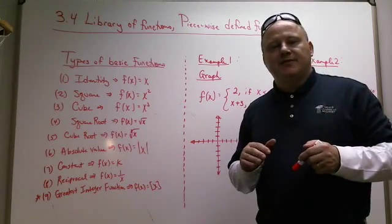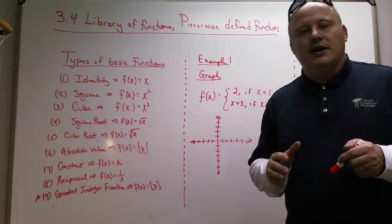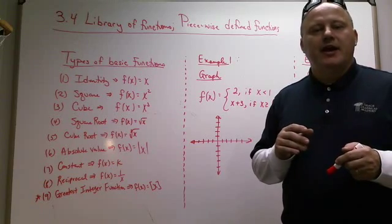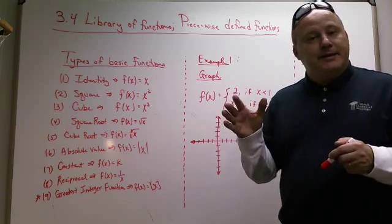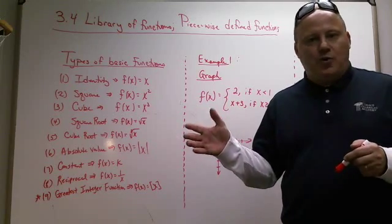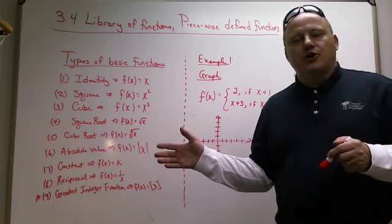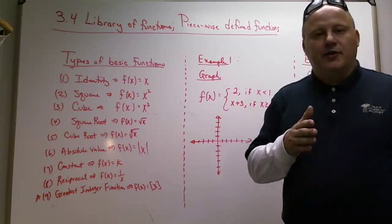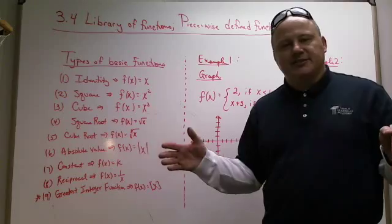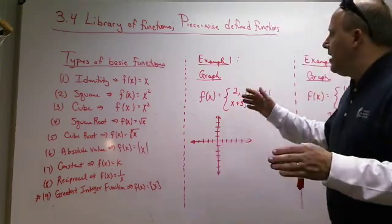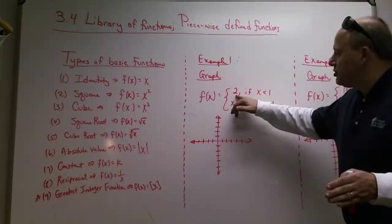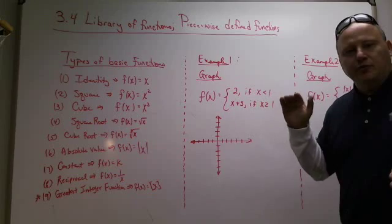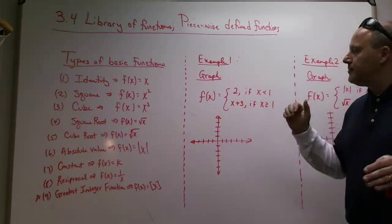Now, what a piecewise defined function is, it's a function. So, therefore, it will pass the vertical line test. But what it is, is how it's defined is in pieces, hence its name, piecewise defined functions. So, on part of the domain, the graph looks like something. And then on another part of its domain, it looks like something entirely different. So, if you look at how it's defined, the function is, the value of the function is two. Well, that's a constant function. And that's a horizontal line, which you will know when you read the book.